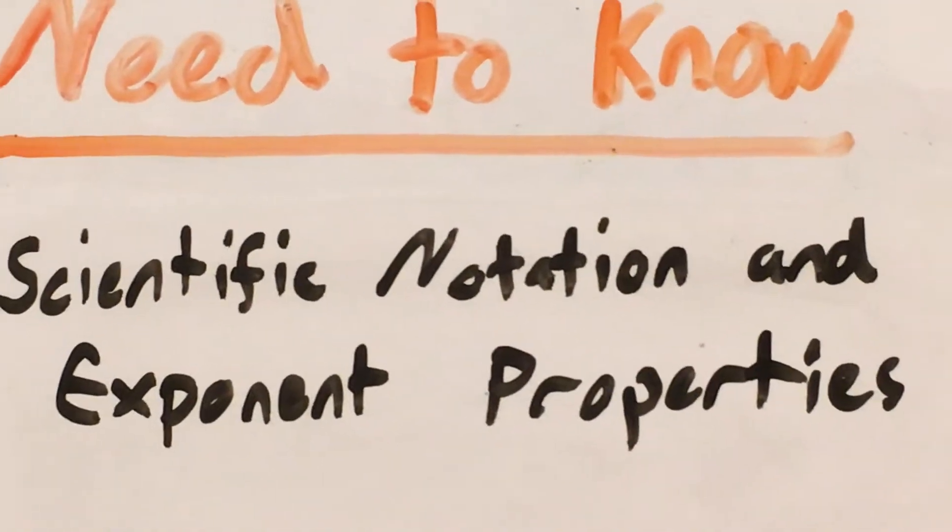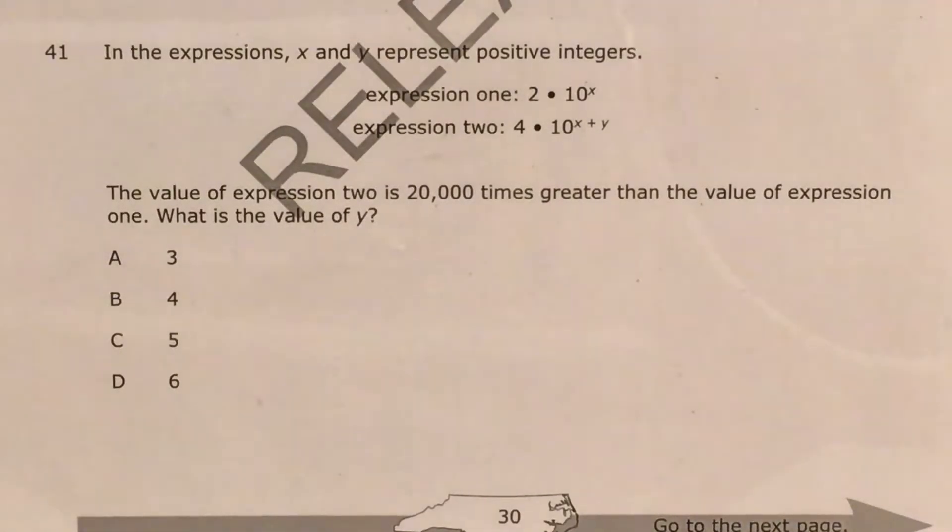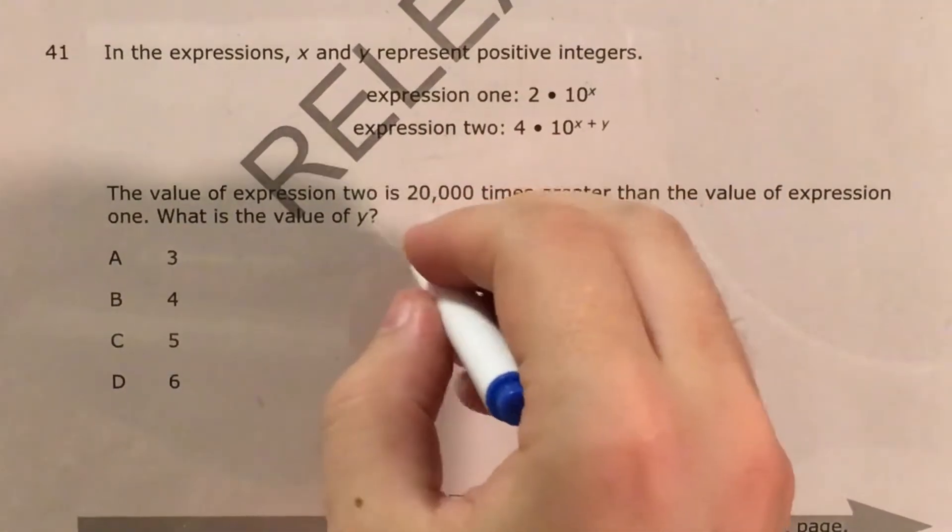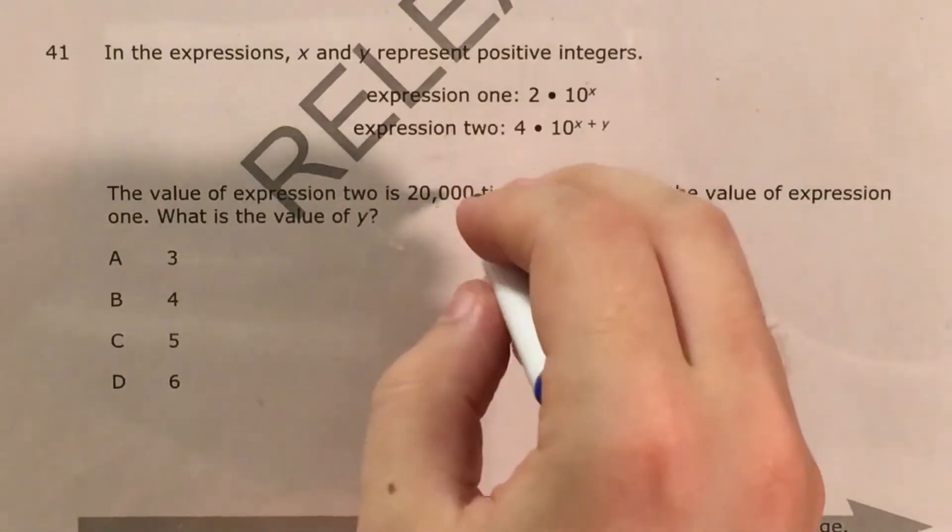This question deals with scientific notation and properties of exponents. We're going to have to use those to figure out this question and others like it. Now there was another question that dealt with scientific notation where I went into fully what scientific notation is. Here I'll just say that if we're starting with 20,000, I want to get this to some number between 1 and 10 times 10 to the something.